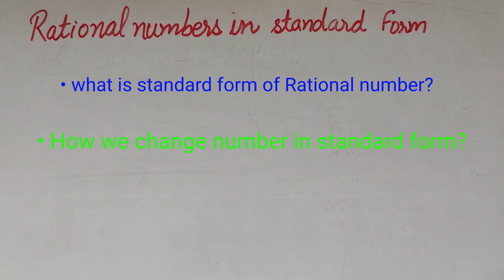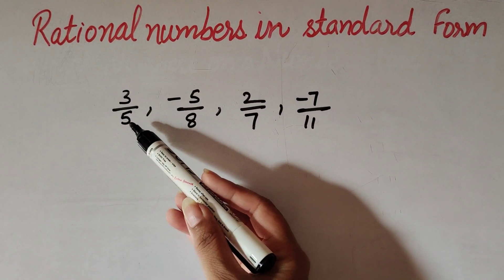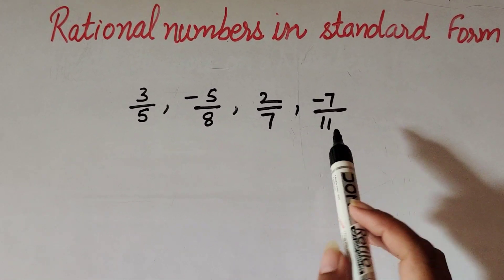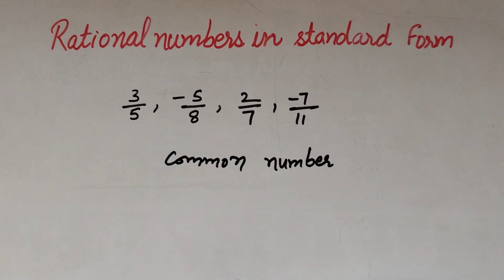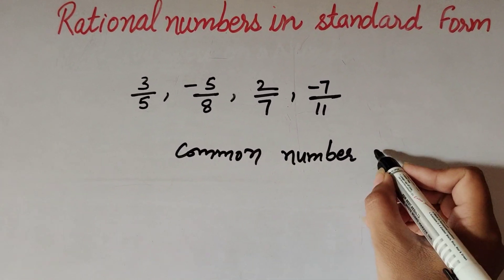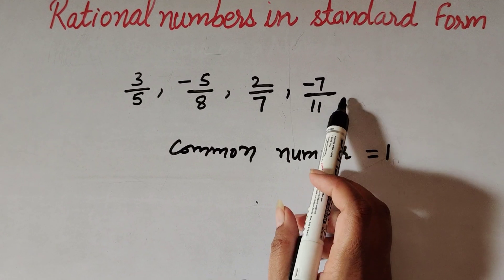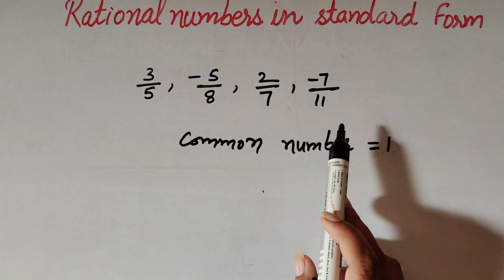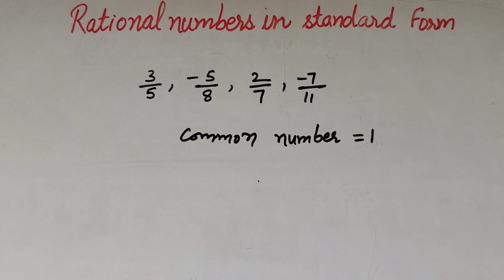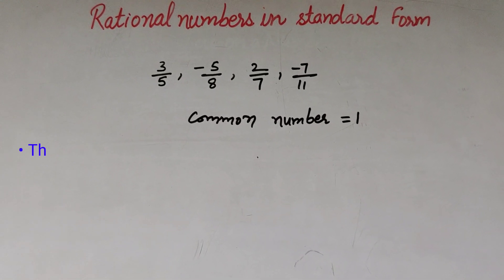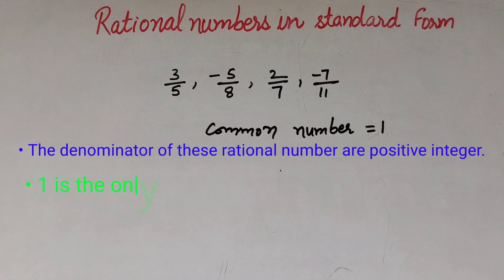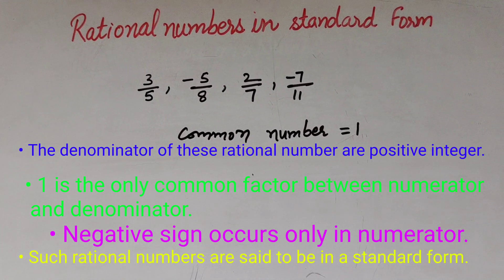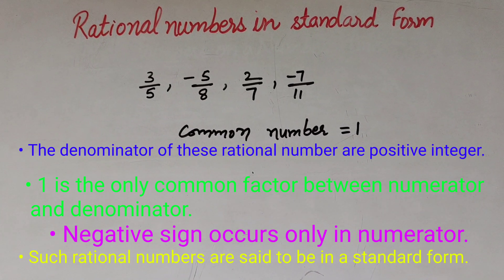We also discuss how we change a number into standard form. Let's start. Observe these numbers: 3/5, -5/8, 2/7, -7/11. These are all rational numbers. Check their numerators and denominators. In each number, 1 is the only common factor between numerator and denominator. The denominators are positive integers, and the negative sign occurs only in the numerator. Such rational numbers are said to be in standard form.